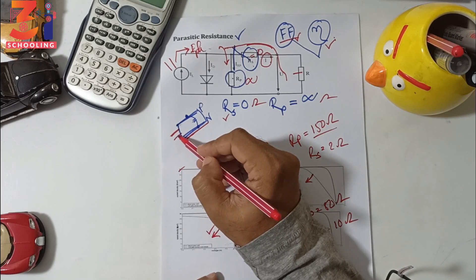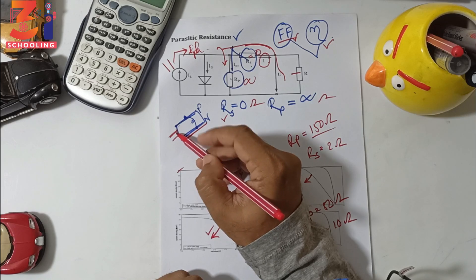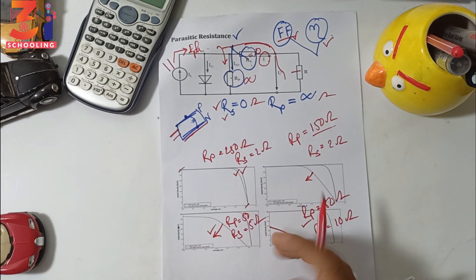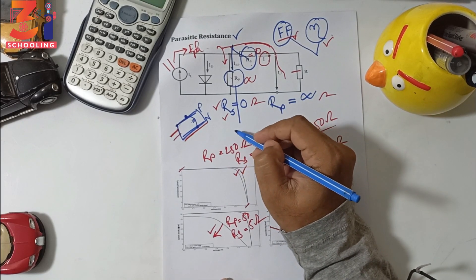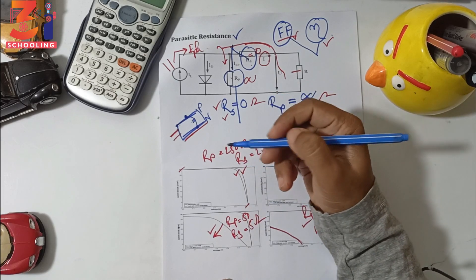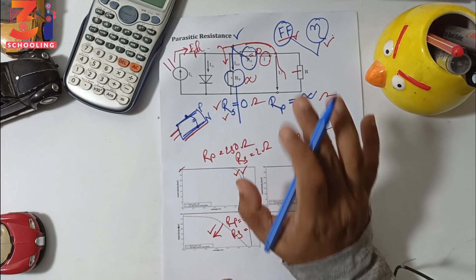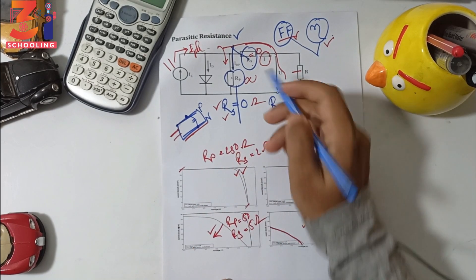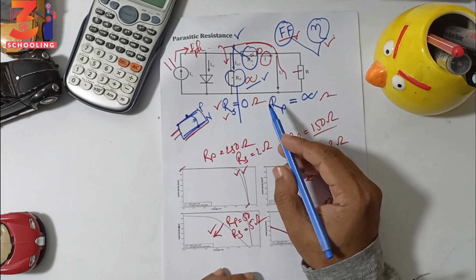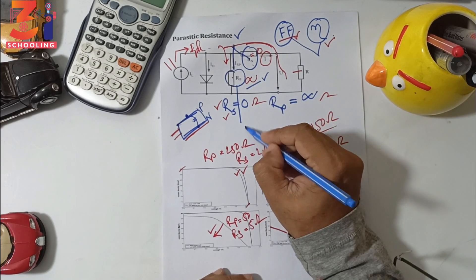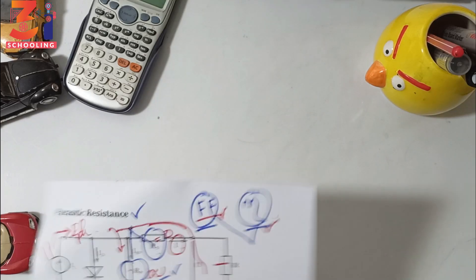The shunt resistance Rp arises because during the manufacture of a solar cell, some leakage current can occur. Ideally Rp should be infinity so that leakage current is minimized. But due to manufacturing errors or defects, Rp can be reduced, lowering the fill factor and efficiency of the cell.